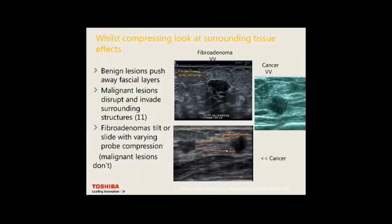While compressing, look at surrounding tissue effects. Benign lesions will push away the fascial layers — like the premammary fascia or ducts. Malignant lesions will disrupt through the layers. Here with a lady with multiple breast cancers, we can see the premammary fascia and breast ducts — the cancer is eating through the premammary fascia.